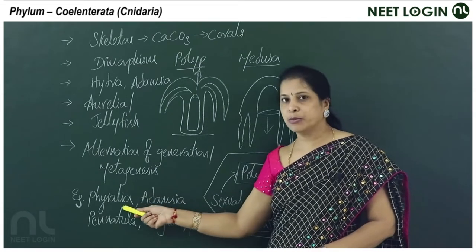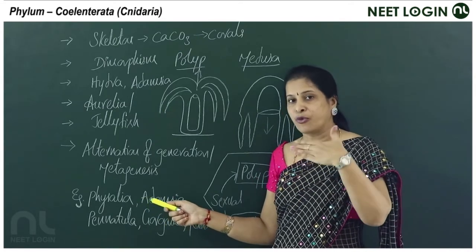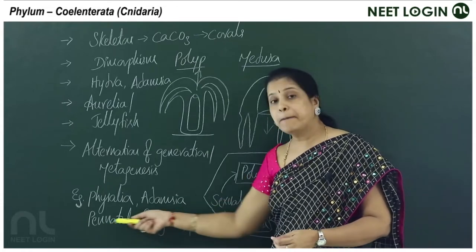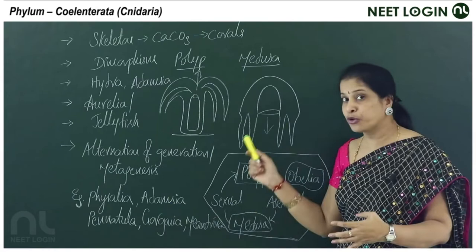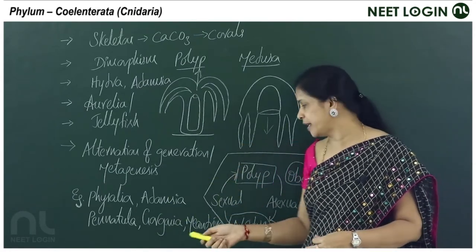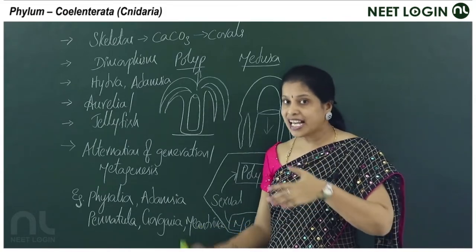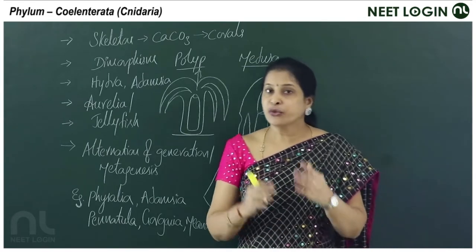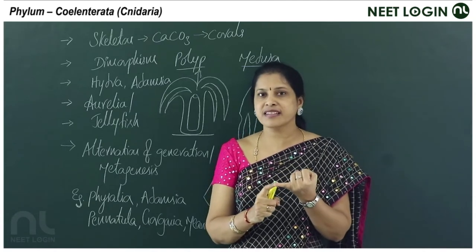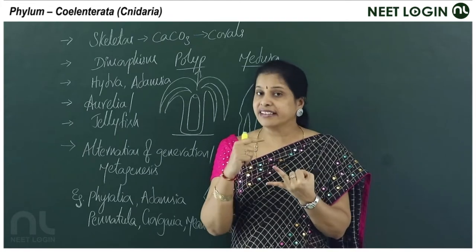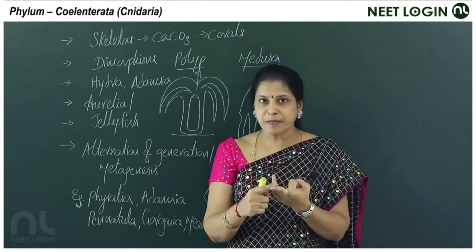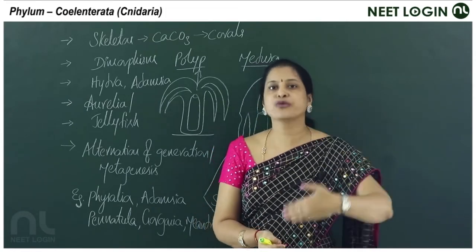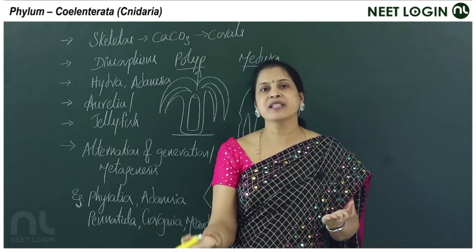Examples of cnidarians include Physalia (Portuguese man-of-war), Adamsia (sea anemone, a polypoid form), Pennatula (sea pen), Gorgonia (sea fan), and Meandrina (brain coral). Key points to remember: cnidoblasts/cnidocytes for defense and prey capture, dimorphic nature of polyp and medusoid forms, and alternation of generation in some like Obelia.